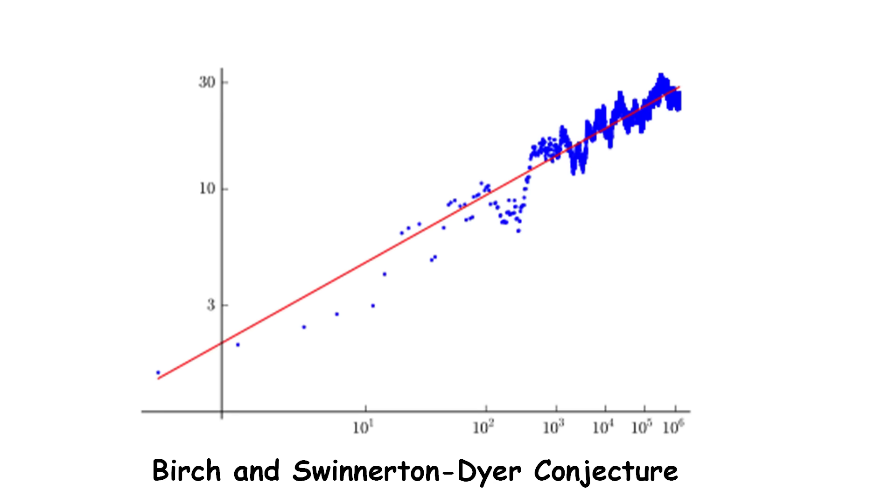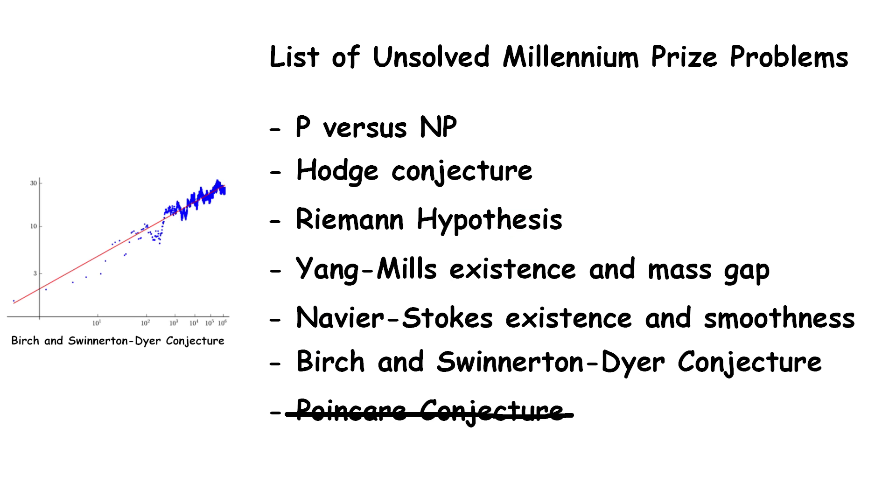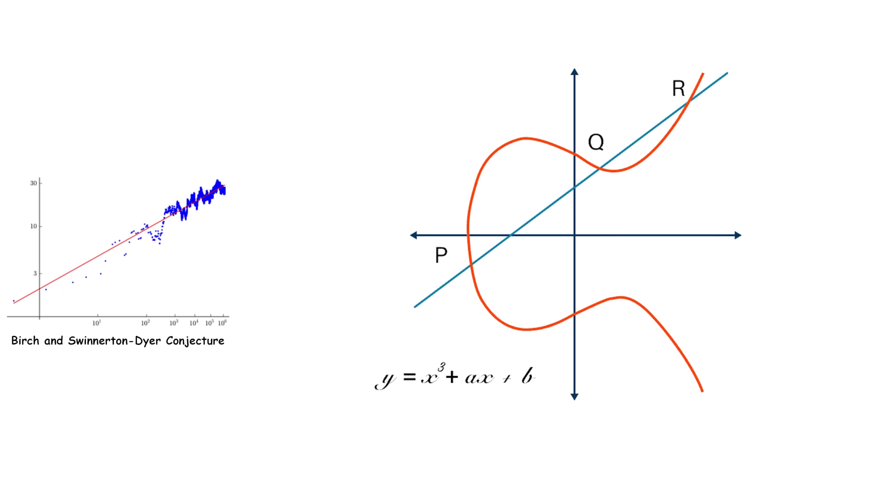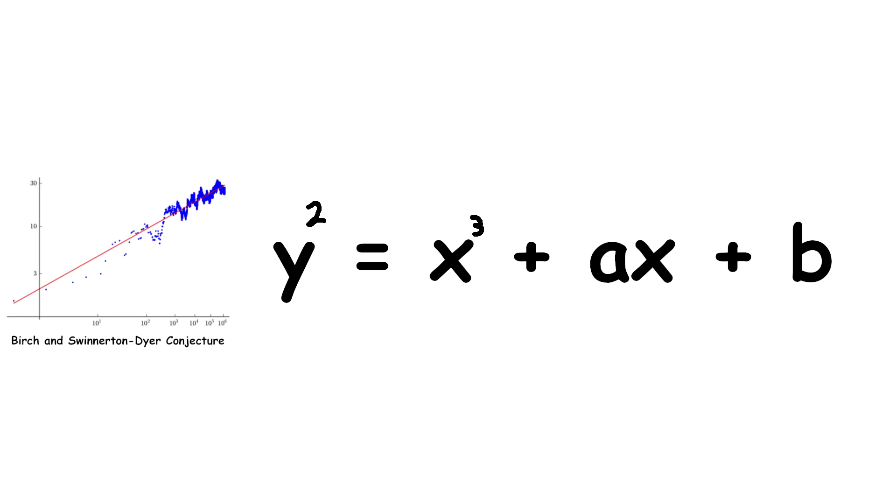Birch and Swinnerton-Dyer Conjecture. The Birch and Swinnerton-Dyer Conjecture is another of the six unsolved Millennium Prize problems, and it's the only other one we can remotely describe in plain English. This conjecture involves the math topic known as elliptic curves. In a nutshell, an elliptic curve is a special kind of function. They take the unthreatening looking form y squared equals x cubed plus ax plus b. It turns out functions like this have certain properties that cast insight into math topics like algebra and number theory.